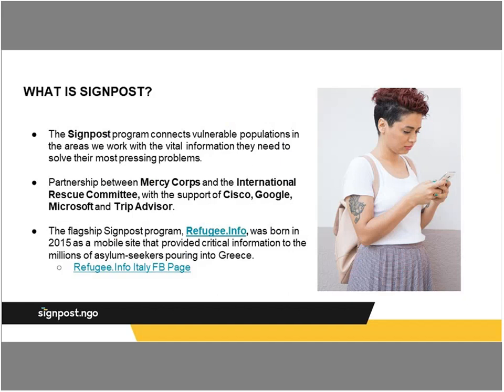The SignPost program connects vulnerable populations with the vital information they need to solve their most pressing problems. This could be things like where services are, how to get a child into school, how to register, how to become legal where you're living, what documentation you need to access services in the country you're living in. But it can also be simple things like how to avoid getting a ticket on the bus, what legal services are available. So it can range from very detailed, context-specific information to very general information.